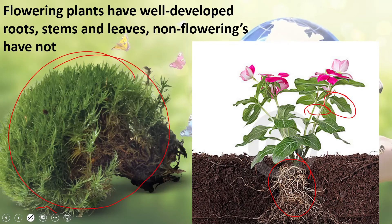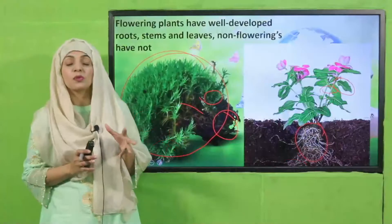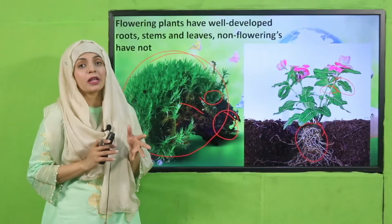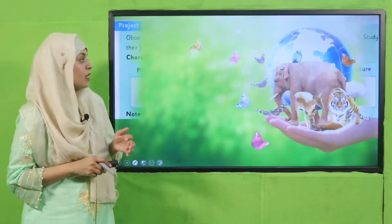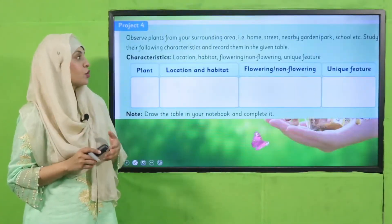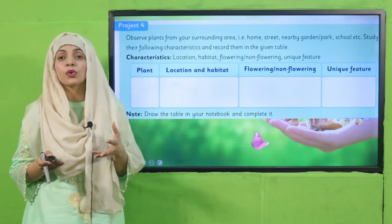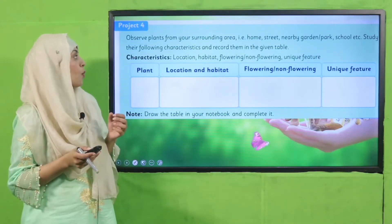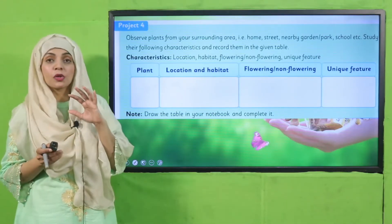Some non-flowering plants do not have a well-developed root, stem, and leaf system. As you can see, you cannot identify the roots, stem, and leaves separately in them. This is the difference between flowering and non-flowering plants.